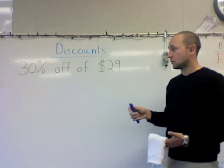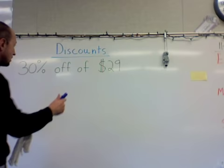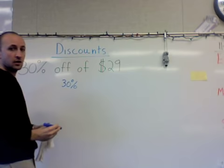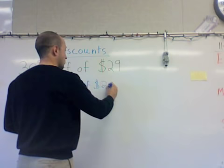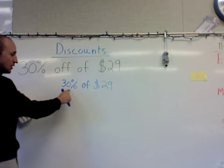So I'm going to set up my problem first. We're being told that we're getting a sale price of 30% off of the original price which was $29. So in other words, it's 30% of $29, and I want to find out what 30% of $29 is because that's what I'm going to subtract from this price. So we set this up as a multiplication problem.